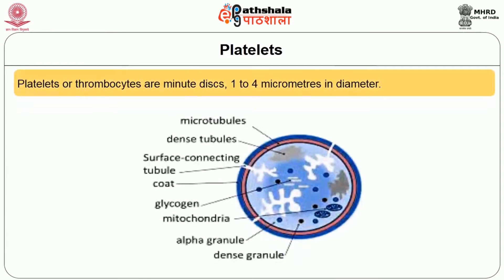Platelets are otherwise called thrombocytes. They are minute disc-like cells present in the blood, 1 to 4 micrometers in diameter. The normal blood concentration of platelets varies between 1.5 to 3 lakhs per microliter. This decreases in certain infections, commonly in dengue fever. These platelets have contractile proteins present within their cytoplasm, called actin, myosin, and thrombocytin.